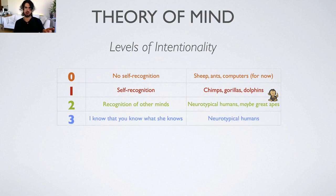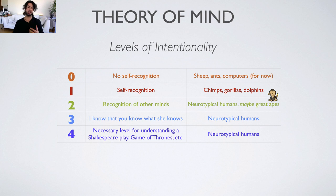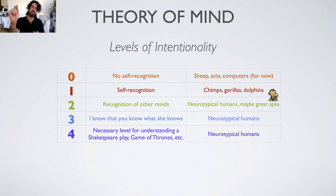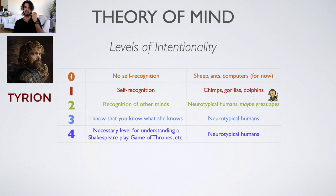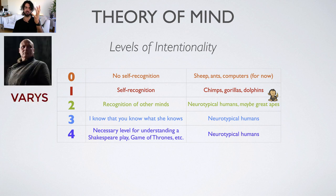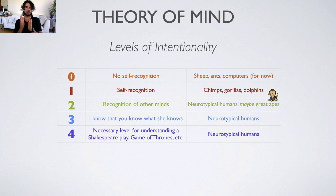The levels of intentionality go up further into territory where only humans operate. Level three is: I know something that you know that she knows — I believe that you think she believes X. Only humans can do this. Level four gets more advanced — most humans can still manage this, and it's the level necessary to understand somewhat complex dramas. Shakespearean plays often involve multiple levels of intentionality, and so does Game of Thrones: Daenerys is worried that Jon believes that if he were to tell Sansa about his claim to the throne, then she won't tell someone else, who will then know and act accordingly. Those are multiple levels of intentionality requiring a reasonably advanced theory of mind.